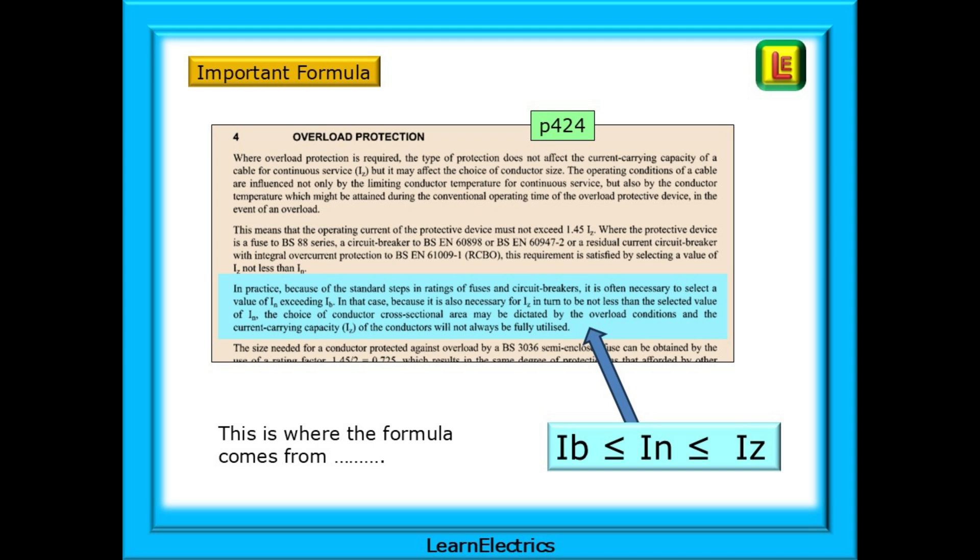Here it mentions IB, IN, and IZ, and their relationship to each other. It tells us that IB must be equal to or less than IN, and that IN must be equal to or less than IZ. So what do these symbols mean?